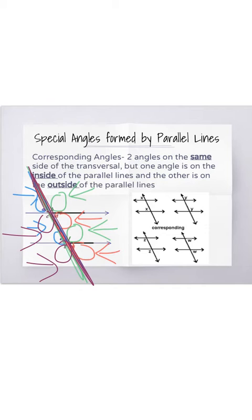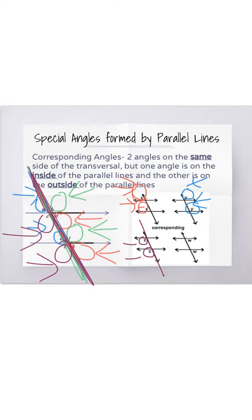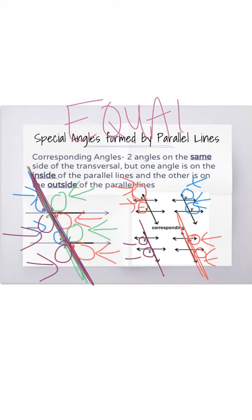If you want to look more closely, in the picture on the right: X is on the same side of the transversal, but one is inside the parallel lines and one is outside. Then you have Y — same side, one is inside and one is outside. You have Z — same side of the transversal, one is inside and one is outside. And W — same side again, but one is inside and one is outside. The cool thing about corresponding angles is that they are equal, so if one was 160 degrees, then the other one is 160 degrees.